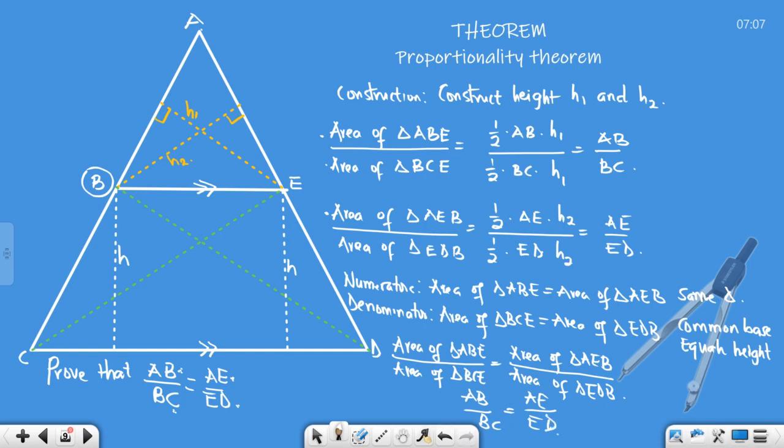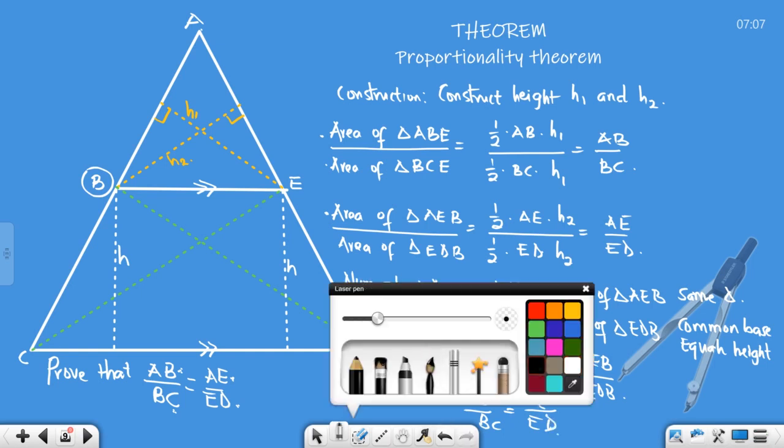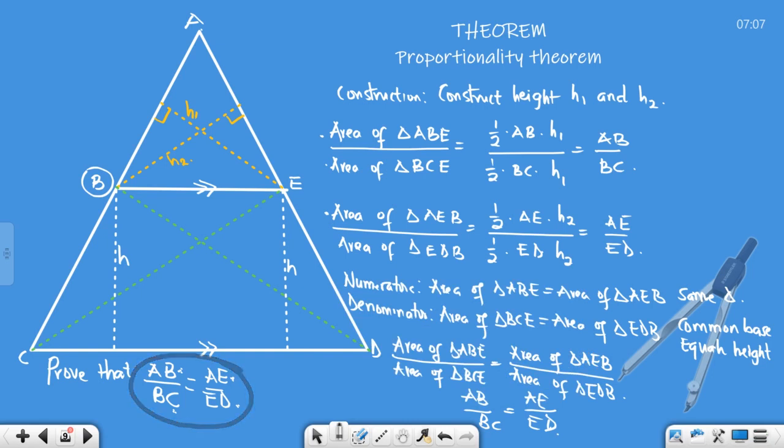It doesn't matter what the examiner gives you here as your base. The rest will just be the same process, the same steps. Join, show your constructions and you're fine. Proportionality theorem is six marks in the bag.